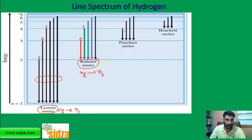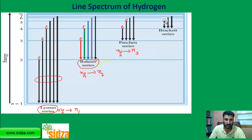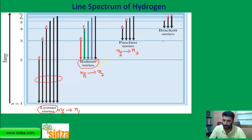The Paschen series is when an electron makes a jump from any higher shell to the third energy level. The Brackett series is when an electron jumps from any higher shell to the fourth energy level — so five to four, six to four, seven to four, or from any higher energy level up to N4.